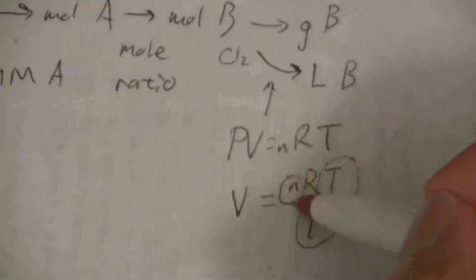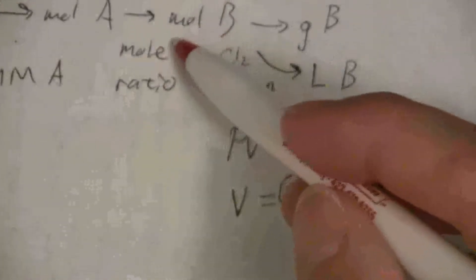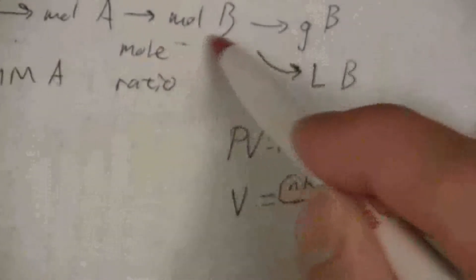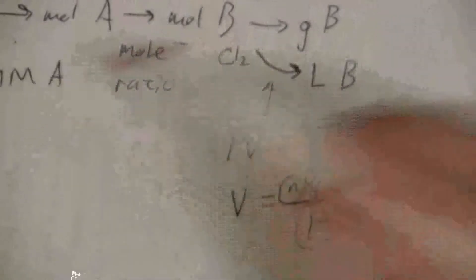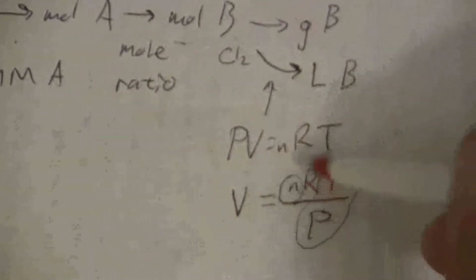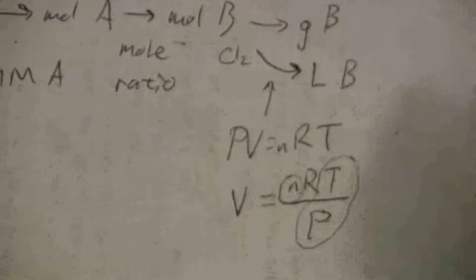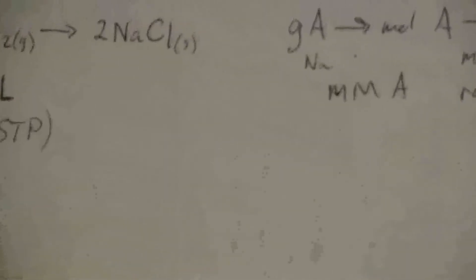And the liters, I'm going to take my volume, so I'm going to take nRT over P. It's at standard temperature and pressure, so I have those. All I need is the moles, because I have the constant, and that's what I get here. So having the moles given the temperature and pressure conditions, it doesn't have to be standard temperature and pressure, but as long as I know what temperature and I know what pressure, and I know the moles from my calculation there, I can find the volume.